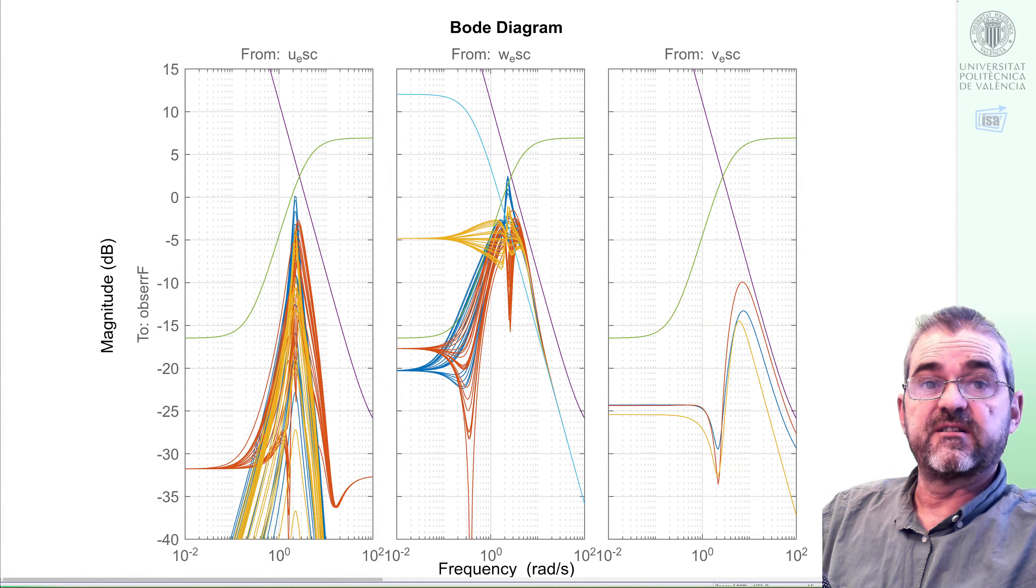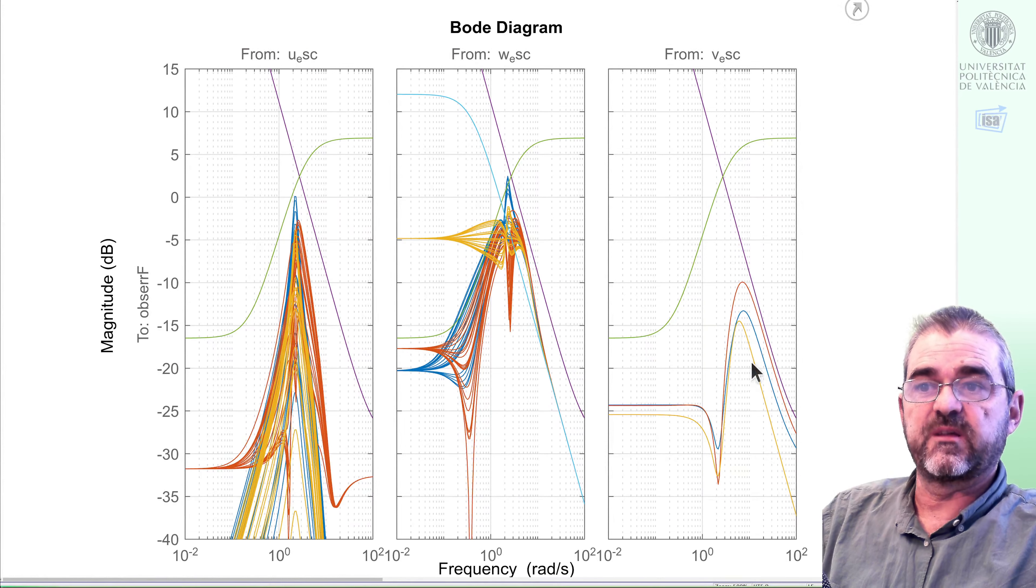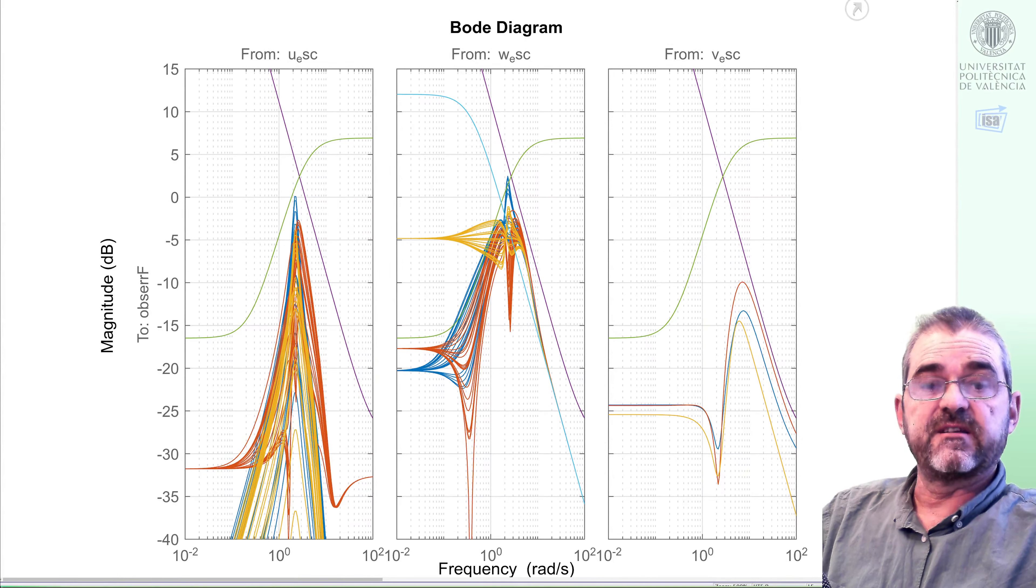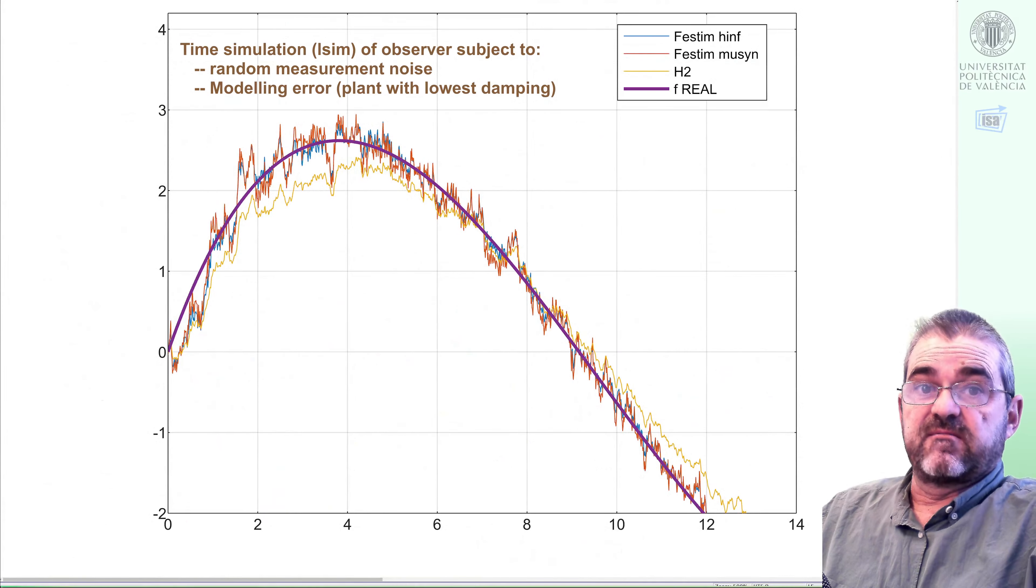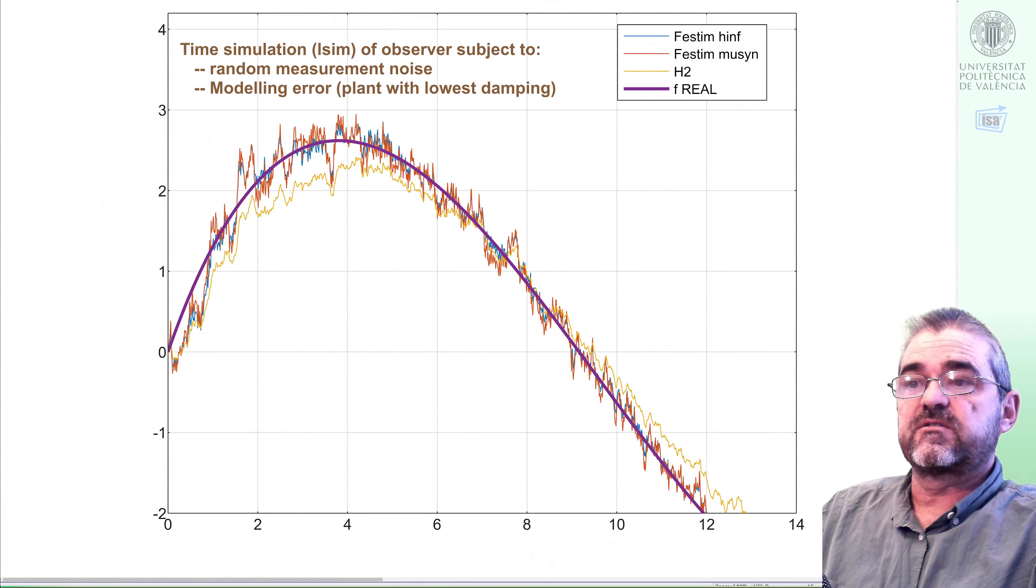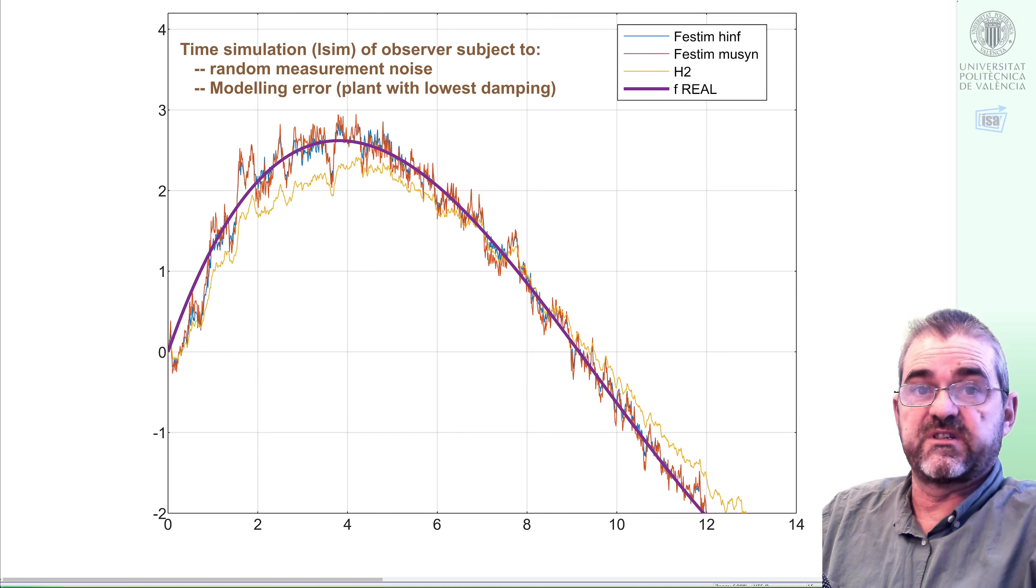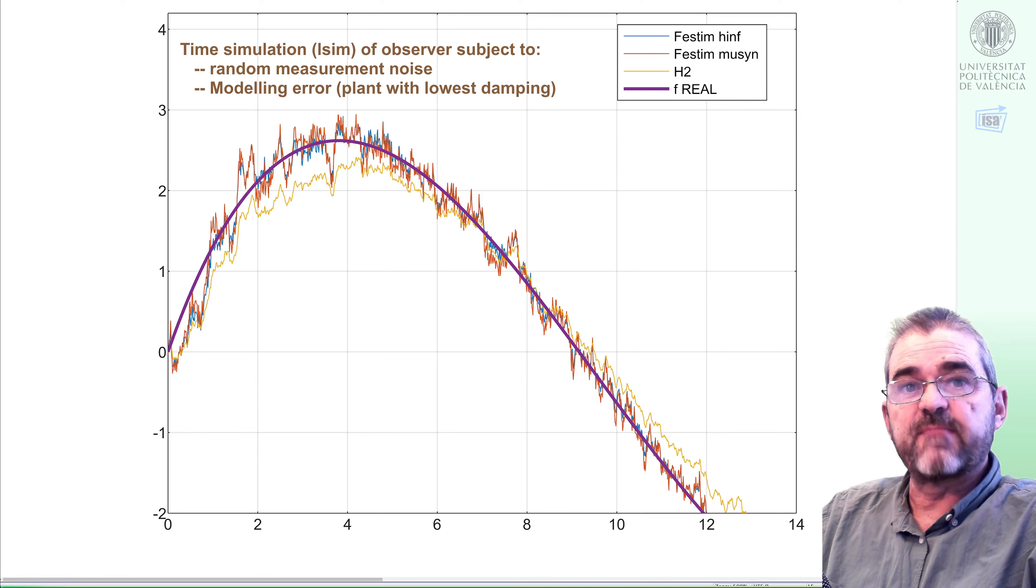But however, the variance due to the measurement noise, it's kind of the integral of the rightmost diagram. Well, the best one will be the H2 minimum variance stuff, and the others will have larger variance. And indeed, we see that the variance around the time-varying mean, the yellow signal H2 is kind of smooth, has lower high frequency content than the blue H infinity and mu-synthesis red, which is the one with highest measurement noise amplification, as the bode diagrams said.